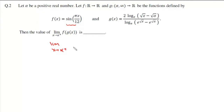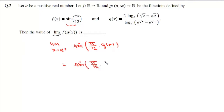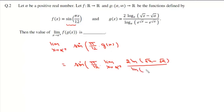So we can write this limit as sine of pi over 12 into the limit as x tends to alpha positive of g(x), where g(x) is 2 log of root x minus root alpha, divided by log of e to the power root x minus e to the power root alpha.